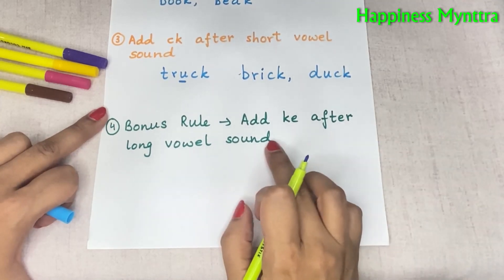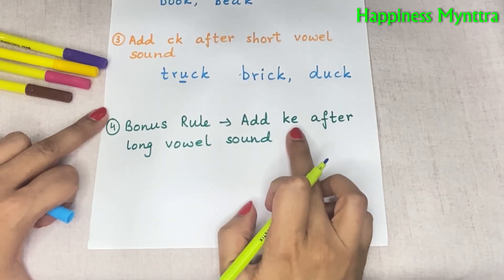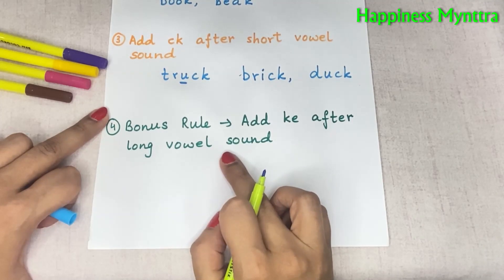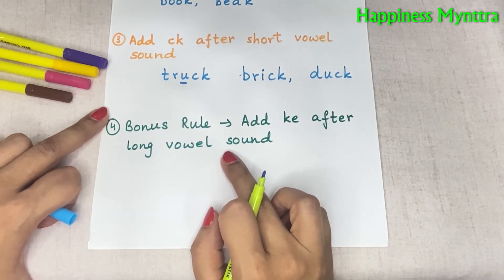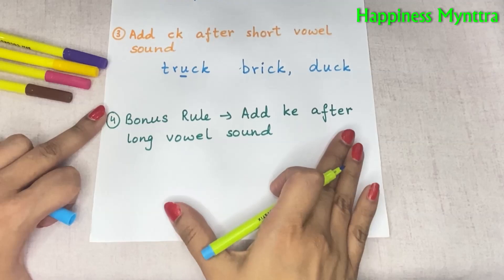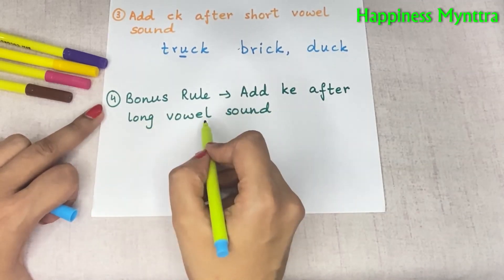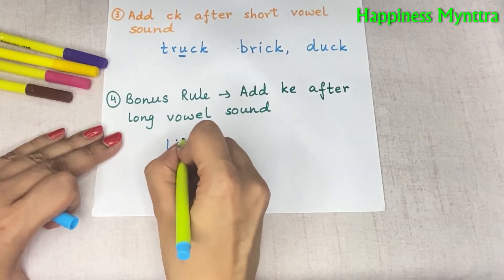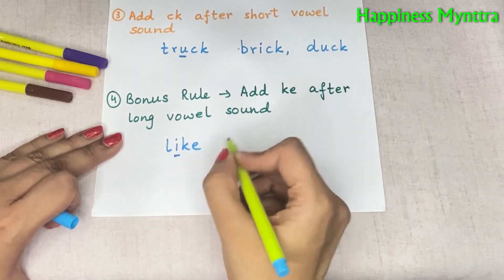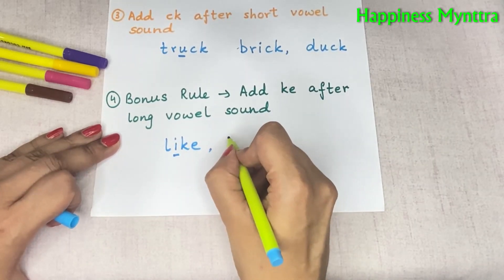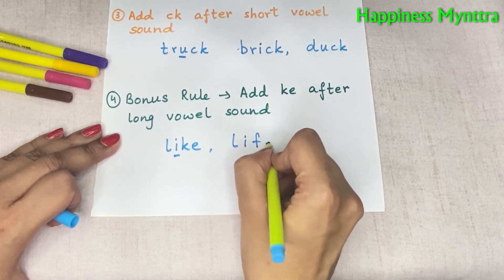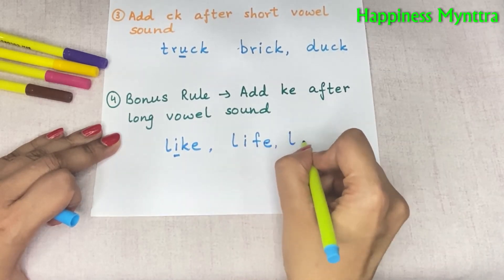Now for the bonus rule: we add KE in case there's a long vowel sound — A, E, I, O, U as long sounds. Then we add KE. For example, words like 'like' and 'late', and so on.